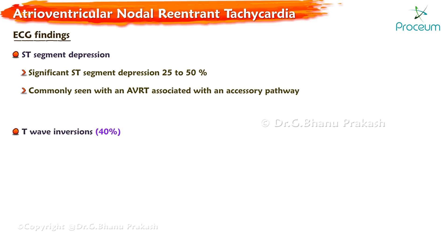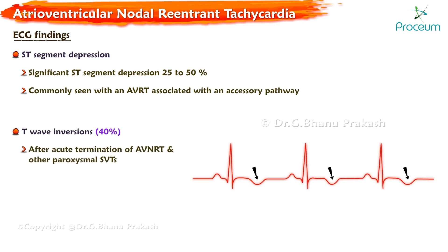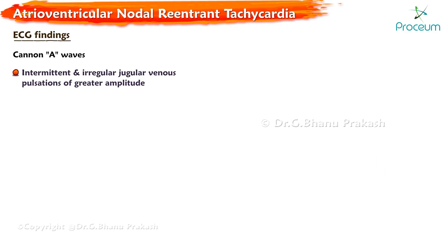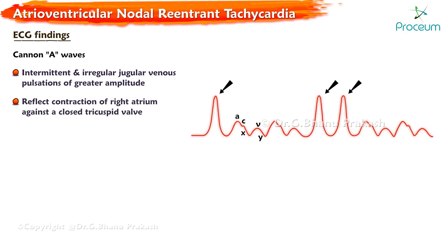After acute termination of AVNRT and other PSVT, T-wave inversions may be seen in the anterior or inferior leads in approximately 40 percent of patients. Canon A-waves are intermittent and irregular jugular venous pulsations of greater amplitude than normal waves, reflecting simultaneous atrial and ventricular activation, resulting in contraction of the right atrium against a closed tricuspid valve.